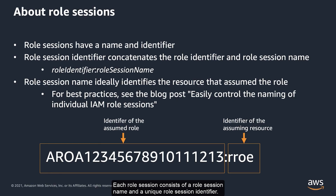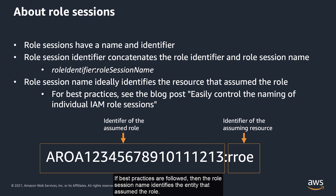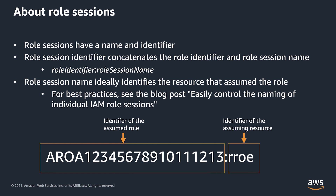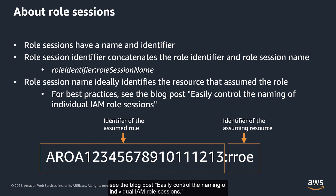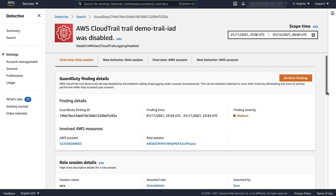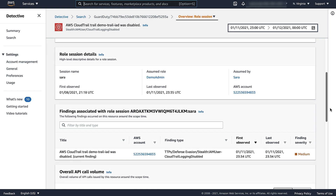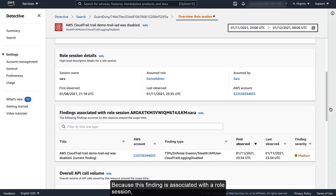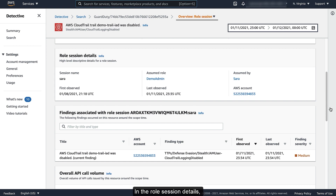Each Role Session consists of a Role Session Name and a unique Role Session Identifier. The Role Session Identifier concatenates the identifier of the assumed role and the Role Session Name. If best practices are followed, then the Role Session Name identifies the entity that assumed the role. For more information about best practices for Role Session Names, see the blog post Easily Control the Naming of Individual IAM Role Sessions. Because this finding is associated with a Role Session, the Finding Profile includes the Role Session Details.